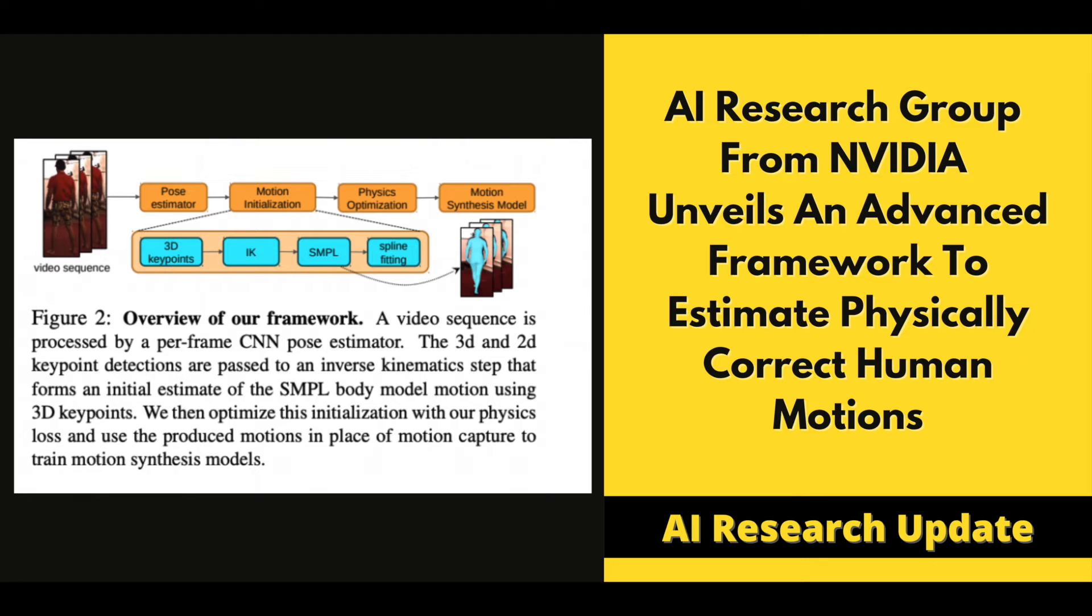A research team from NVIDIA, University of Toronto, and Vector Institute developed a method for generating human motion based on monocular RGB videos that do not require expensive equipment like motion capture.